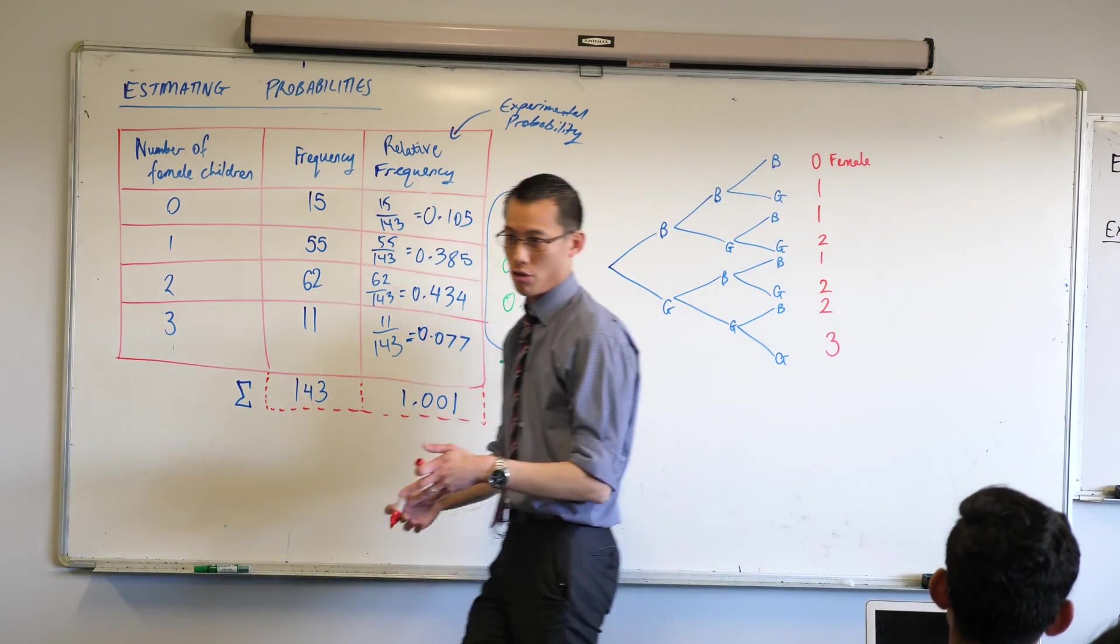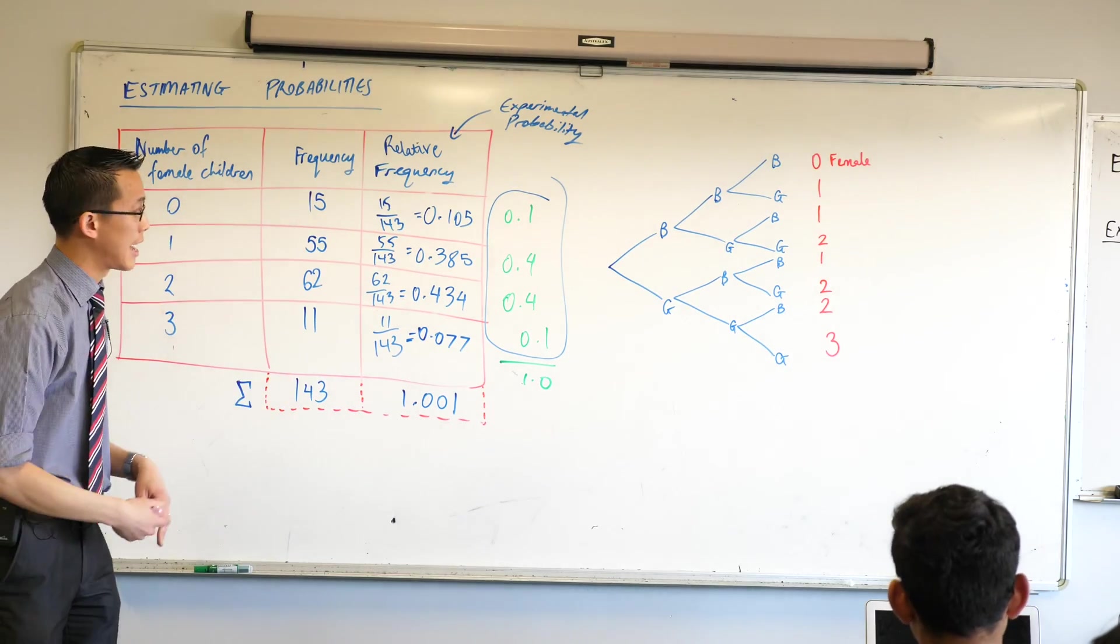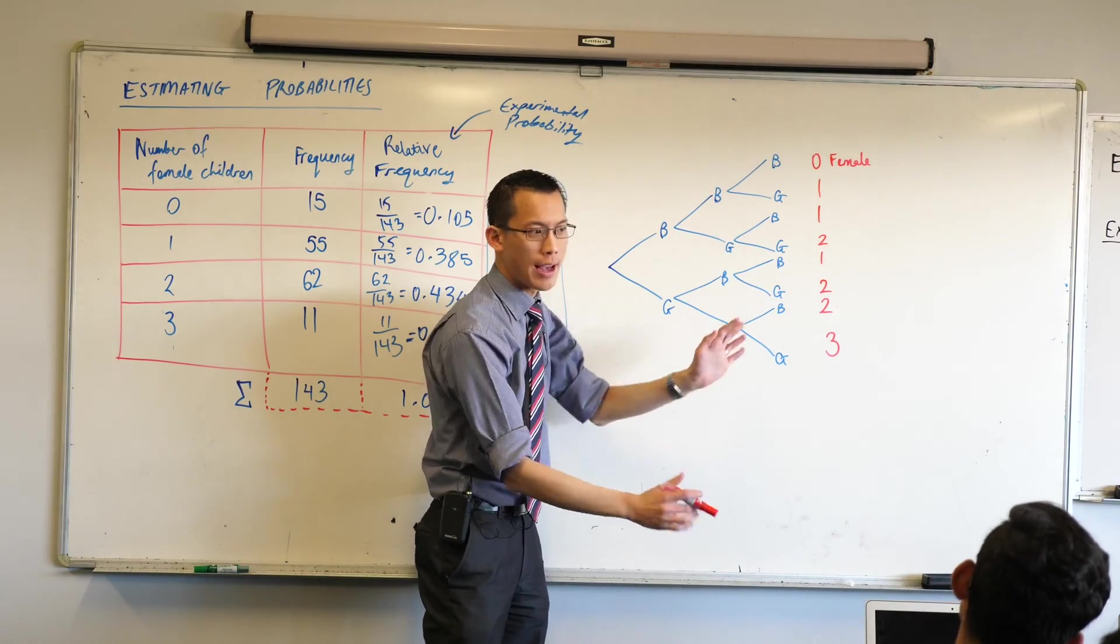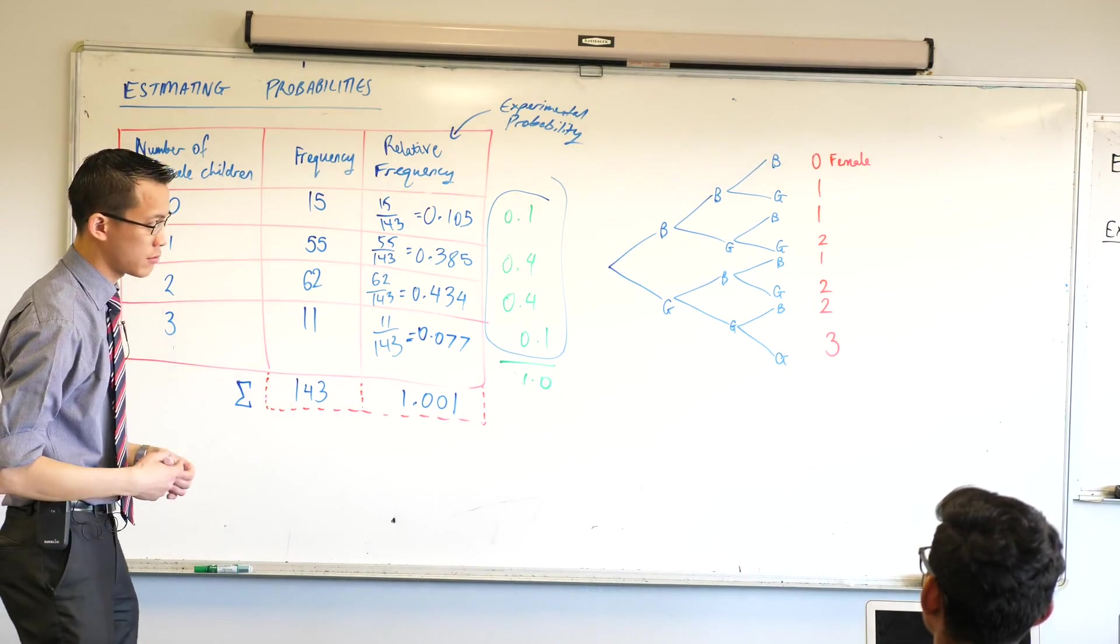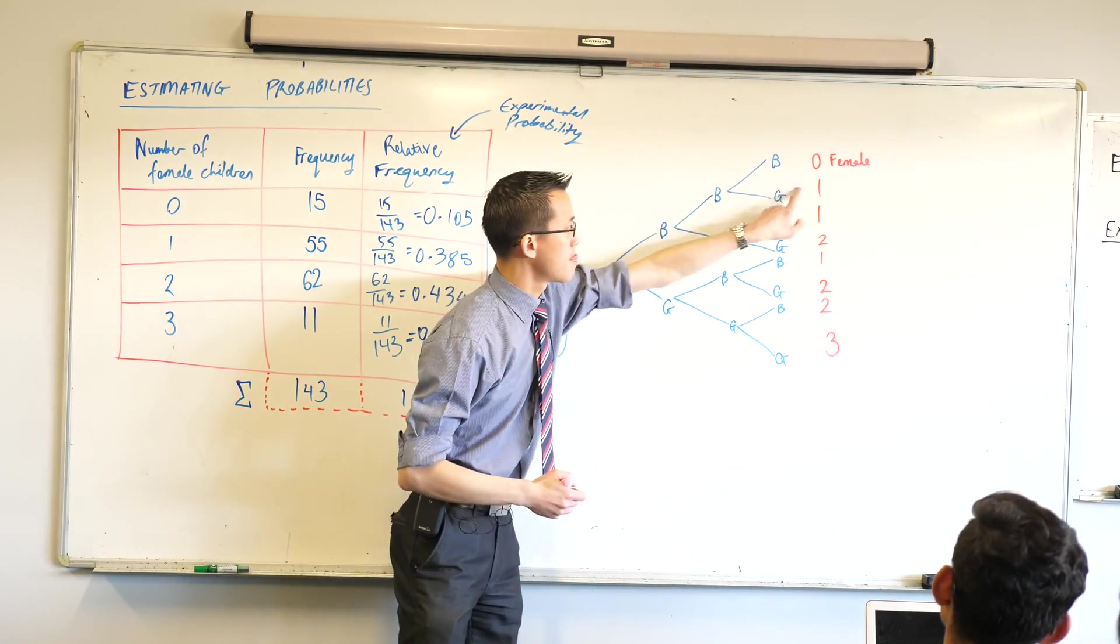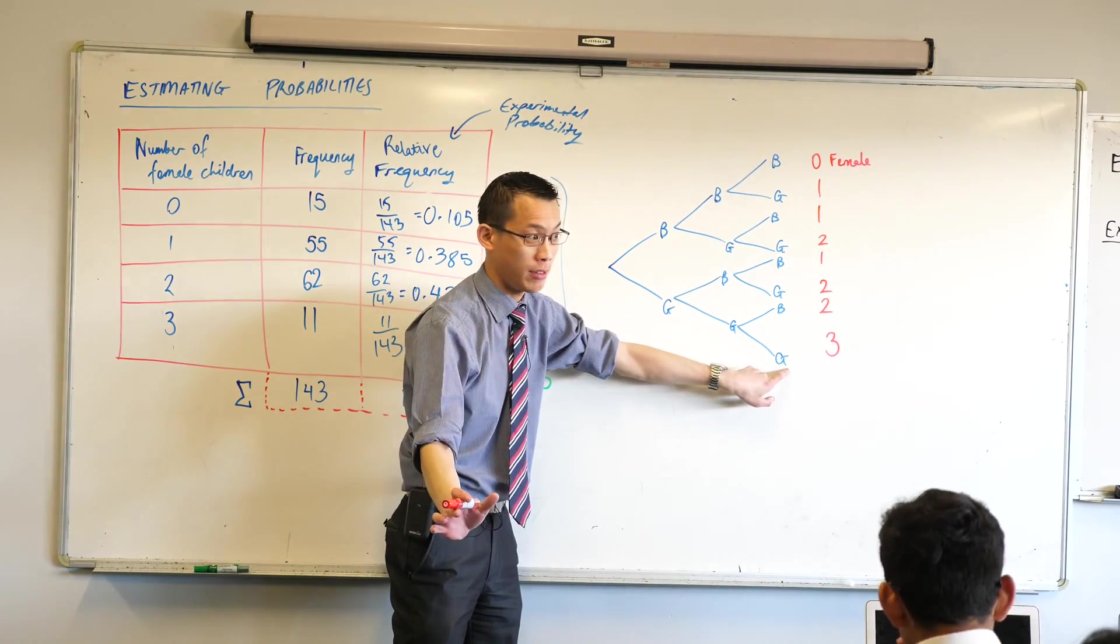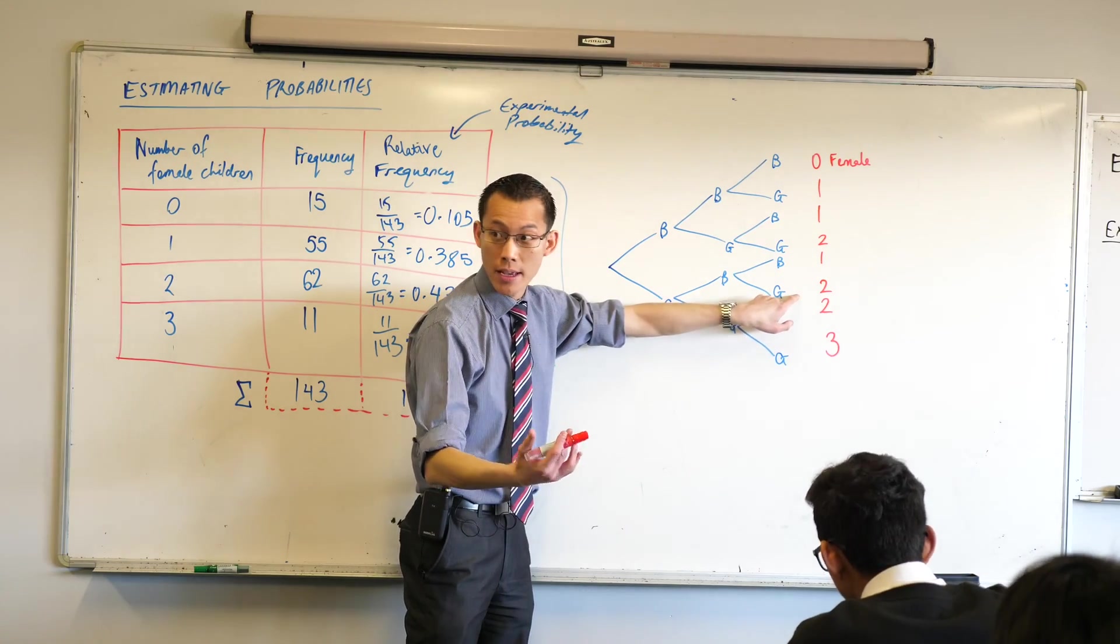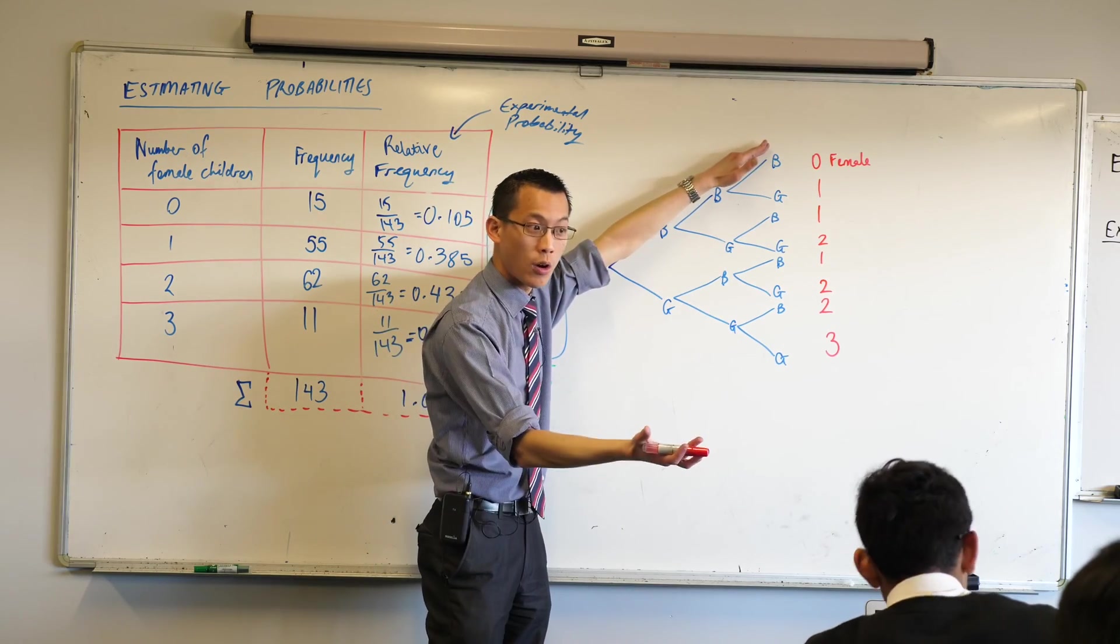Now if we can assume, which is pretty close, not exactly, but if we can assume that boys and girls are equally likely, what should the probability of each of these ones on the end be if they're all equally likely? What's the size of the sample space? How many events are there? Eight. And we're assuming they're all equally likely. So it's one over eight. Another way you can calculate that is a half times a half times a half still give you one over eight.